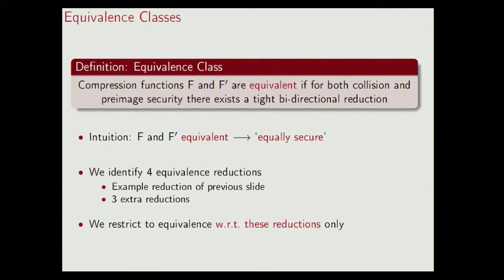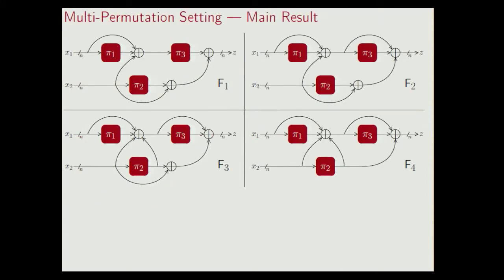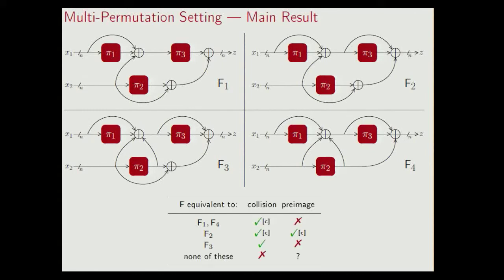So let's now go to the main result for the multi-permutation setting. For the multi-permutation setting, we identify the following four functions: F1, F2, F3, and F4. Note that we restyled the figures a bit, but there is a one-to-one correspondence between this picture and the one you saw a couple of slides back. We proved that if you take any of the 2 to the power 14 compression functions, this function achieves optimal collision security if and only if it is equivalent to one of these four functions.